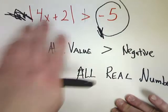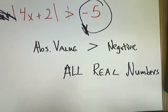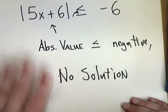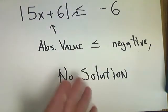But we don't have that. Once the absolute value is by itself, if it's greater than a negative, it's all real numbers, because we know that absolute values are always greater than negative numbers, because they're positive. On the flip side, if you get the absolute value by itself, and it's less than or equal to a negative number, you know it's no solution,